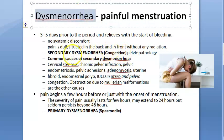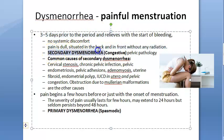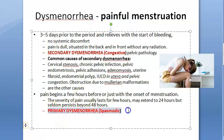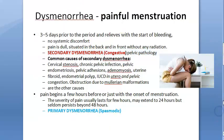Dysmenorrhea means painful menstruation. Pain that occurs prior to the period is secondary dysmenorrhea, also called congestive dysmenorrhea, because it is due to some pelvic pathology. Pain beginning just before or at the onset of menstruation is primary dysmenorrhea, also called spasmodic dysmenorrhea. Secondary dysmenorrhea is more dangerous because it is associated with pelvic pathology.